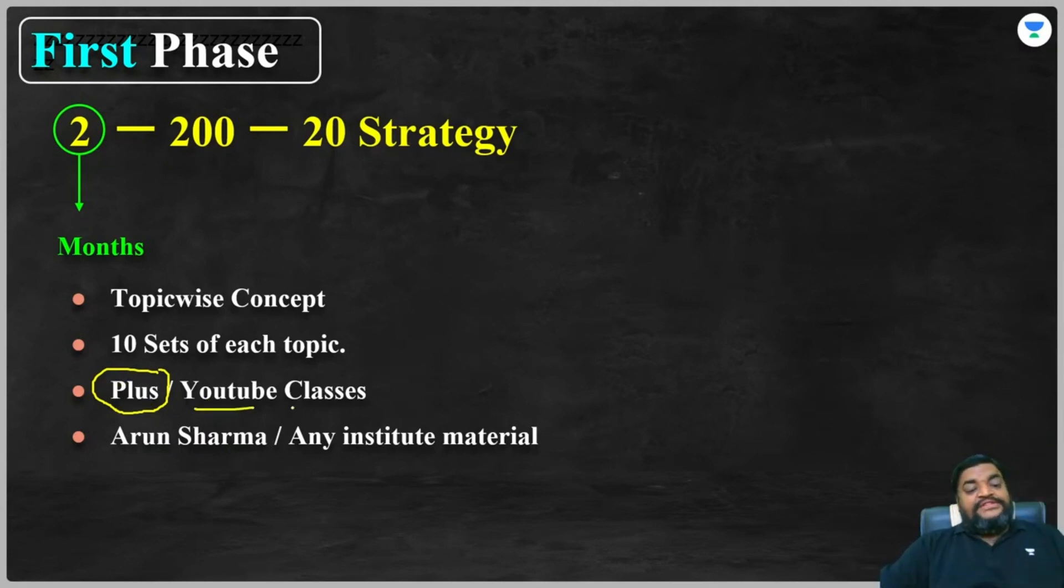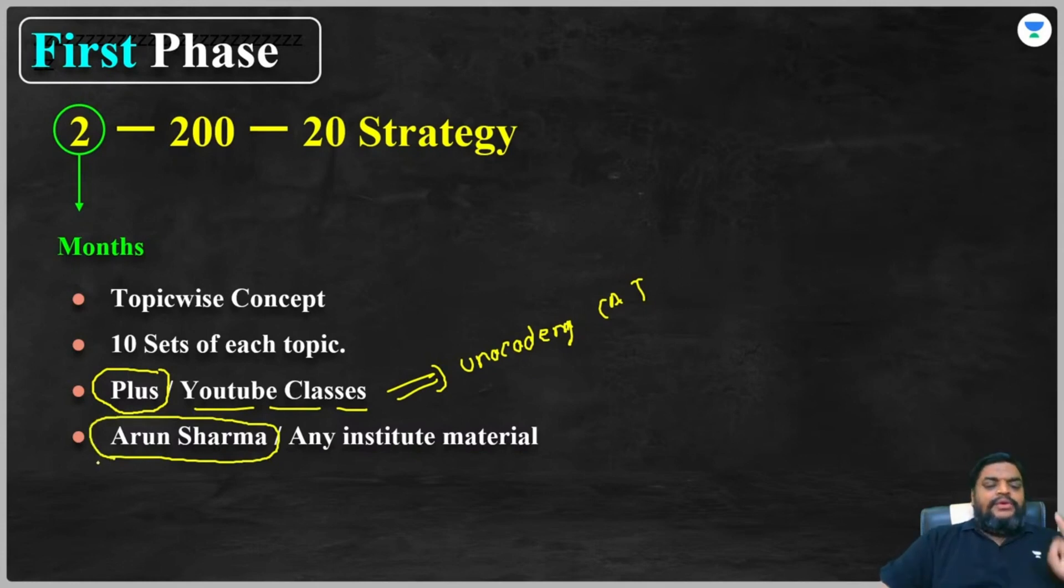Self-study students, YouTube classes follow Unacademy CAT channel and all your basics will be taken care of. In addition to it, you guys should solve Arun Sharma. That's the best book available in market for DILR, no question. Or you can refer to any institute material, but don't use outdated material. If you get hands on any institute material, use after 2021, either 2021 or 2022 or 2023. Don't go before 2021.